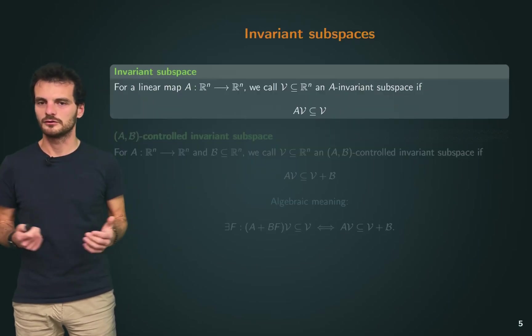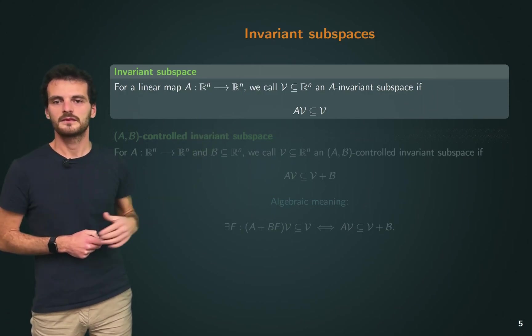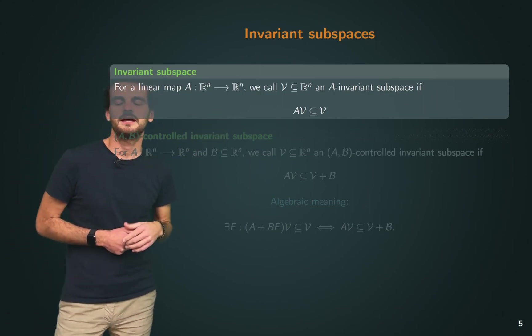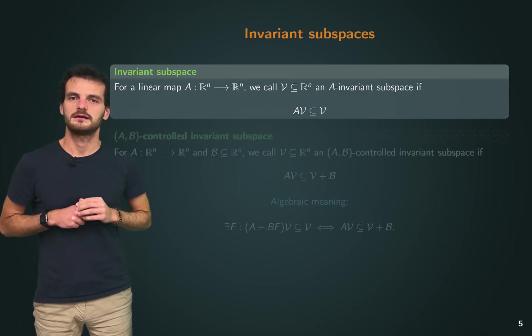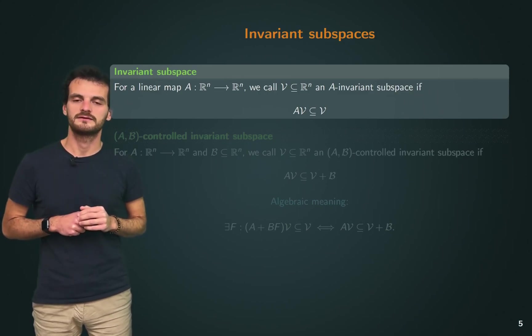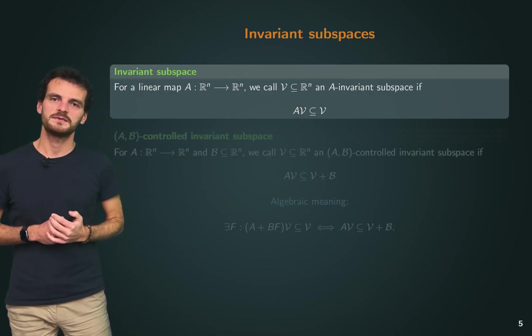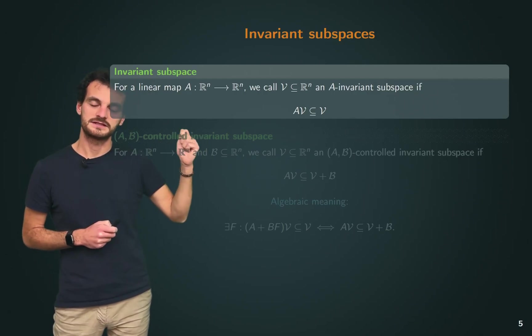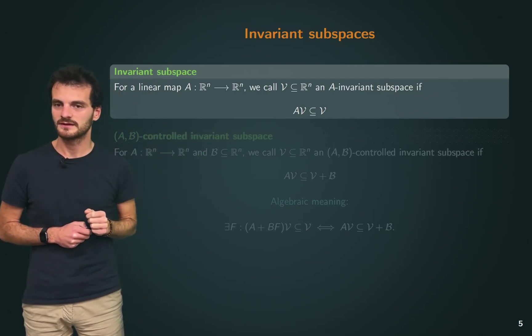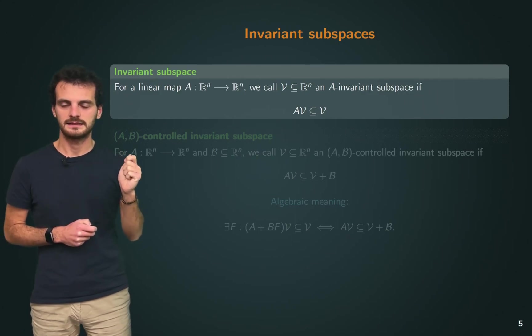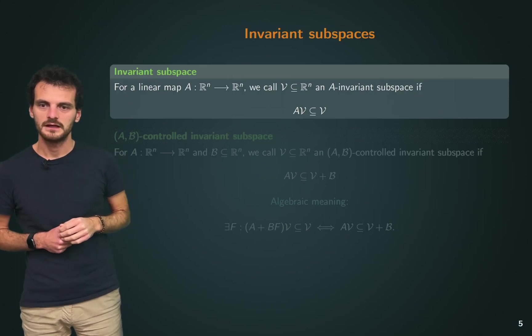So, who are these subspaces? First of all, we need to introduce what an invariant subspace is. Given a linear map A from R^n to R^n, we call this calligraphic V an A-invariant subspace if this subset inclusion holds. This means that if x, your state at time t, belongs to V, which is an A-invariant subspace, then x at t+1 will also belong to the invariant subspace.